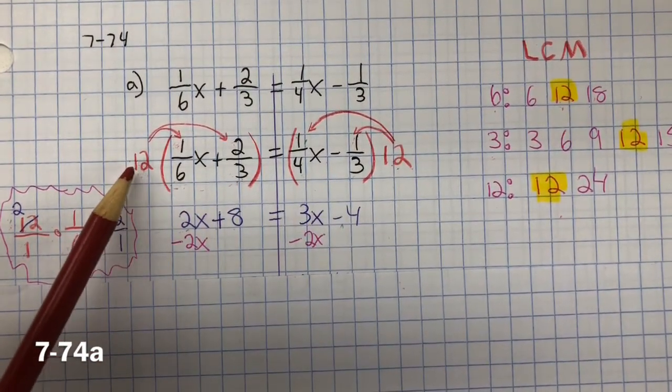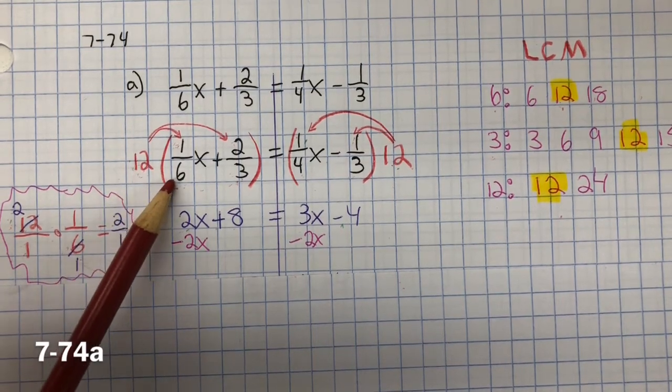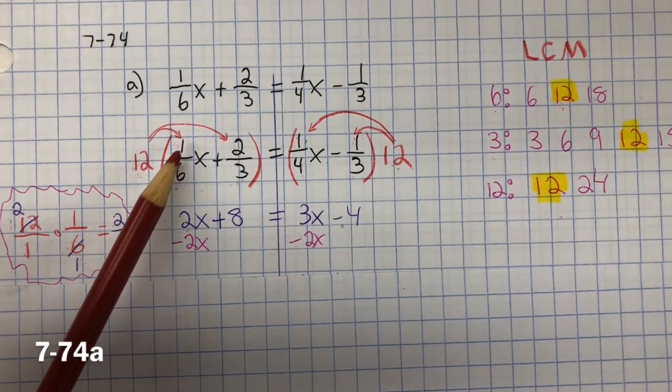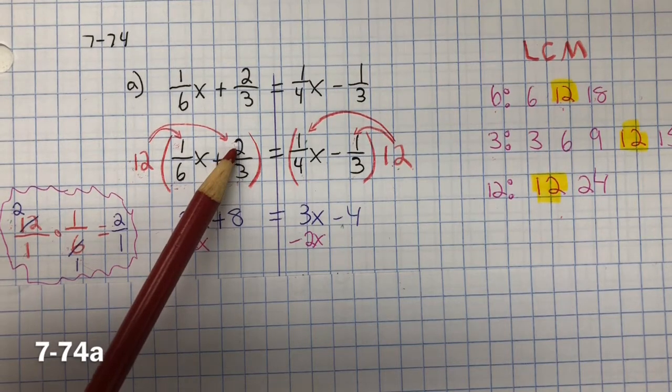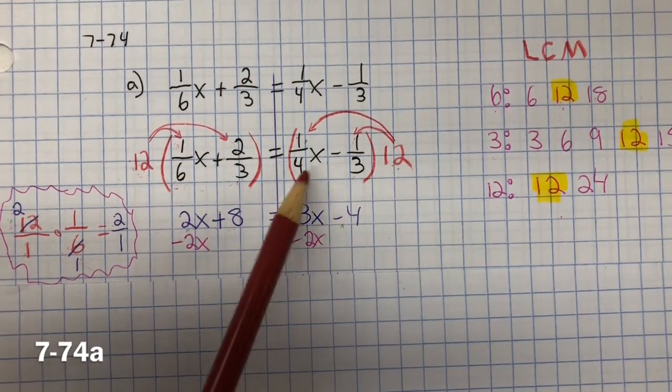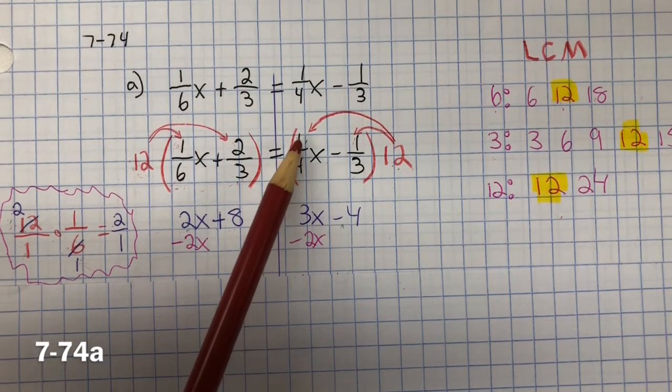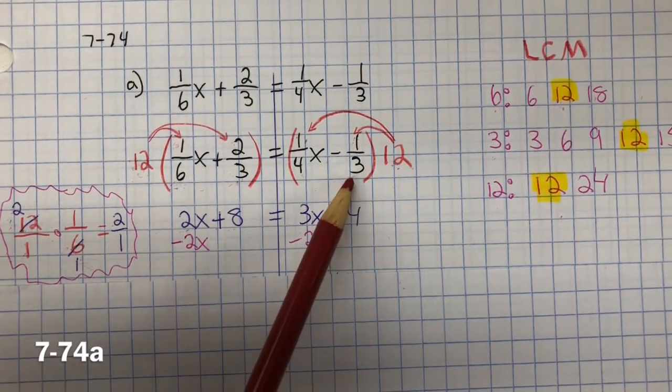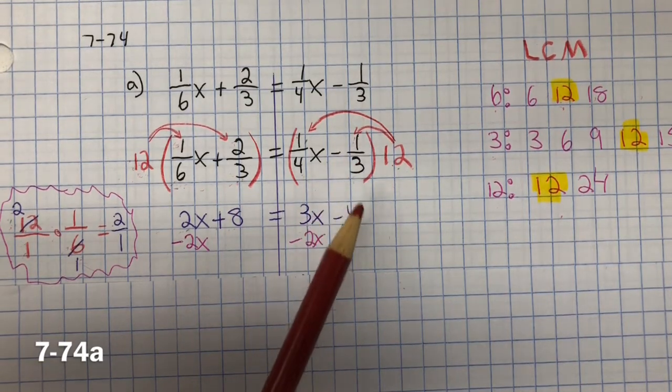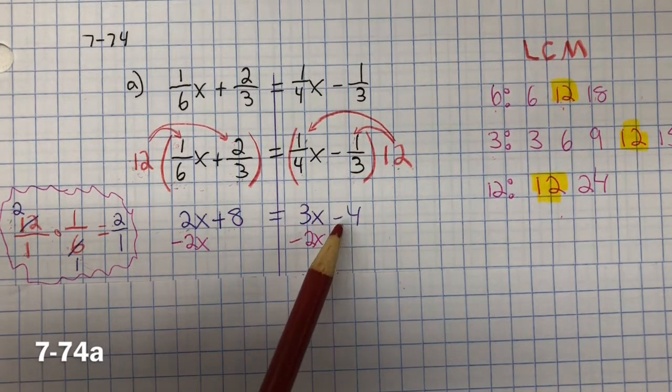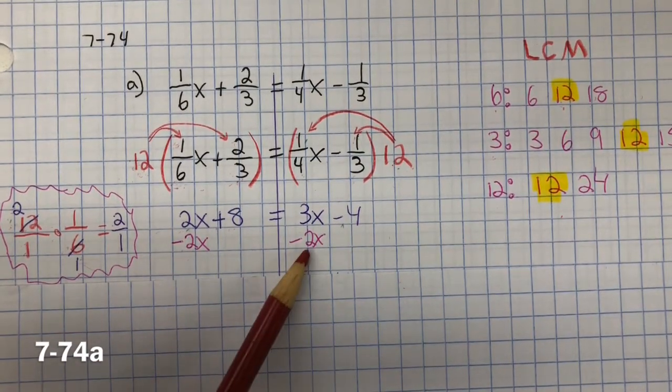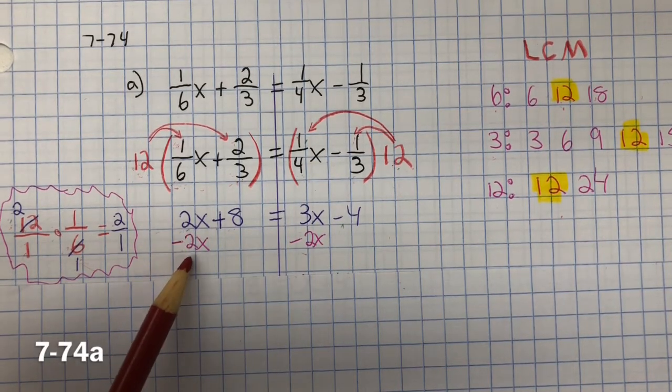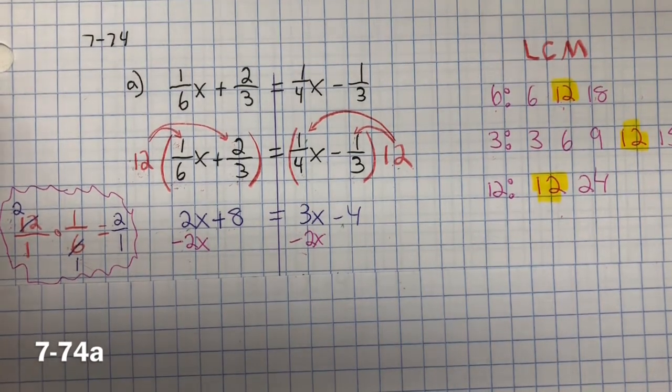I would do that to each term. 12 divided by 6 is 2, 2 multiplied by 1 is 2. 12 divided by 3 is 4, 4 multiplied by 2 is 8. 12 divided by 4 is 3, 3 multiplied by 1 is 3. 12 divided by 3 is 4, 4 multiplied by 1 is 4. And since it's a negative 1 third, it would be negative 4. Now we subtract 2x from both sides. Inverse property of addition is subtraction, created a zero pair. 3x minus 2x is x.